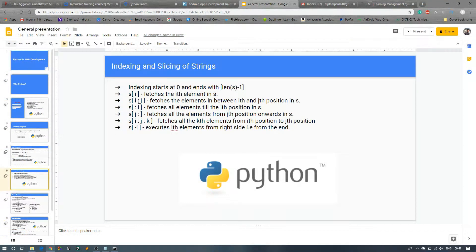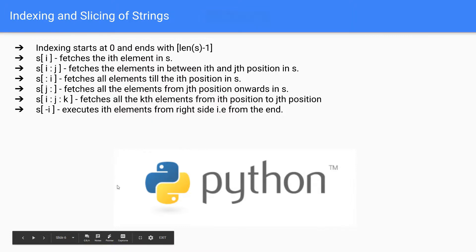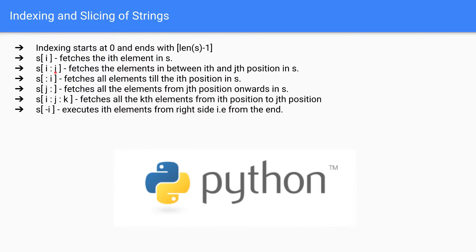The next operation is S[i:j], which fetches all the elements between the i-th and j-th position in the string. S[:i] fetches all elements up to the i-th position. S[i:] or S[j:] fetches all elements from that position onwards. S[i:j:k] fetches every k-th element from position i to position j.